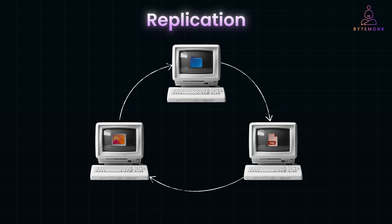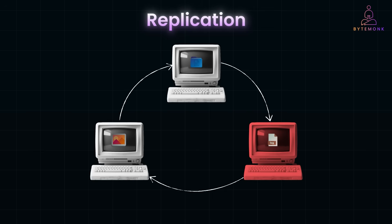In a simple replication setup, server one is the primary for documents and server three holds a backup copy. Server two is the primary for images and videos while server one has a backup copy. And server three is the primary for logs while server two holds a backup copy. Even if one server crashes, data is still available — but this increases storage cost since we are storing multiple full copies of each file.